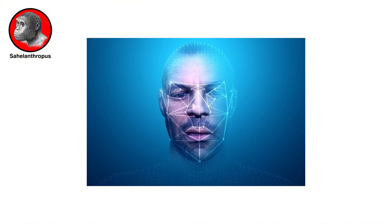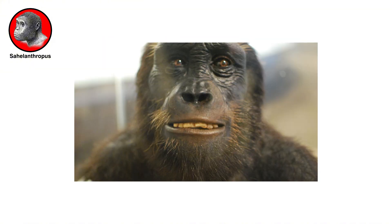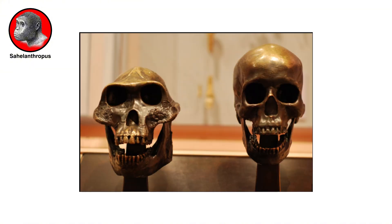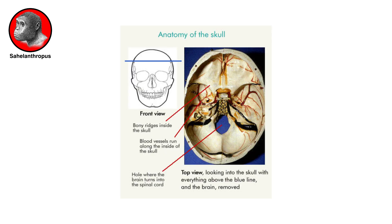Human-like features included small canine teeth, a short middle part of the face, and a spinal cord opening underneath the skull instead of towards the back as seen in non-bipedal apes.